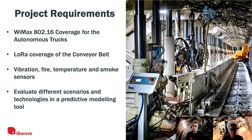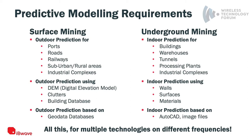The new tool had to provide predictive modeling for both surface mining and underground mining. For surface mining, they needed outdoor prediction for typical facilities like ports, roads, railways, suburban and rural areas, and their complex. This modeling needed to work using DEMs (digital elevation models), clutters containing environment properties, and building databases. If there are existing buildings surrounding the mine, they needed that database. Outdoor prediction is usually based on geodata — you don't need to model the mine itself per se; everything should be loaded from the geodatabase.